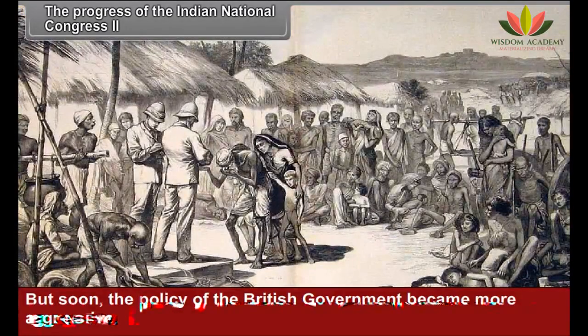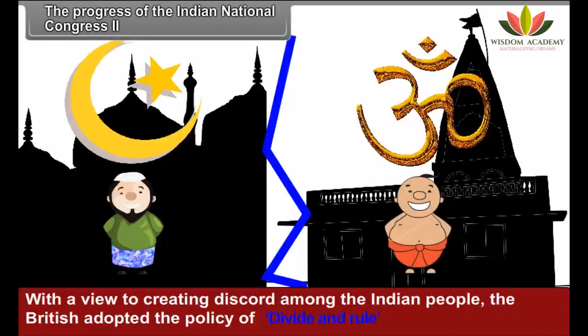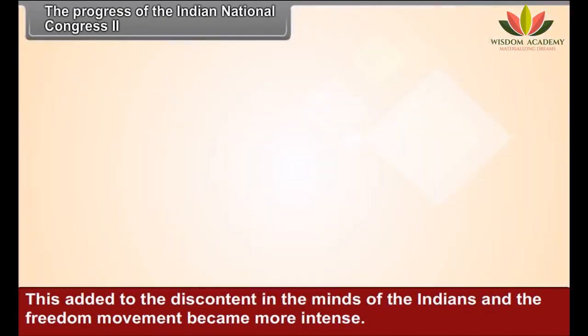But soon, the policy of the British government became more aggressive. With a view to creating discord among the Indian people, the British adopted the policy of divide and rule.